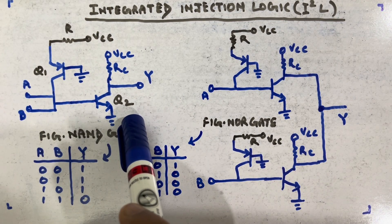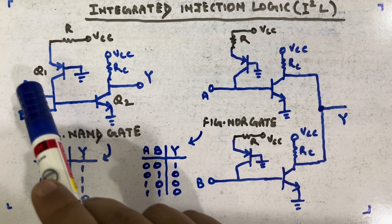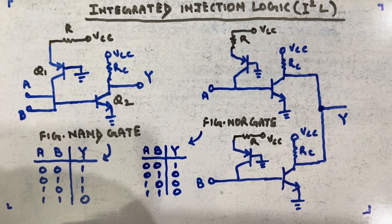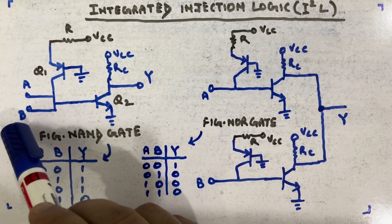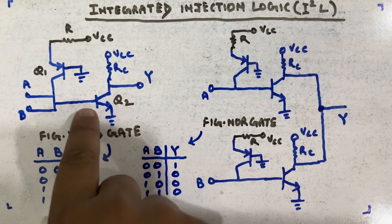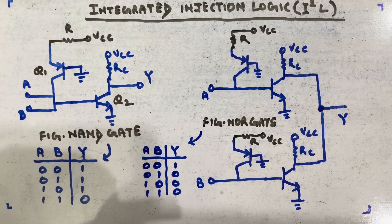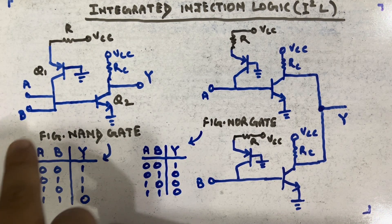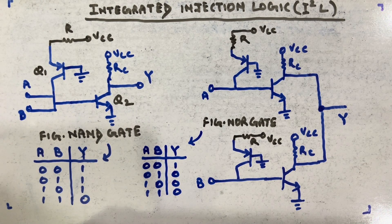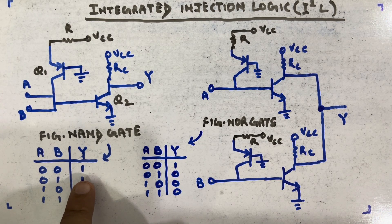For the NAND gate, you can see transistors Q1 and Q2. Instead of one input, I have two inputs here; VCC and RC are the same. The only difference is that I have taken two inputs. When both inputs are zero-zero, the current flowing through the branch goes to A and B, so no current is drawn by Q2 and it is cut off, making the output VCC — logic one. When the input is zero-one, the current goes to A only, not to B because B is one, and Q2 again gets no current since all current is consumed by the low-resistance path at A.